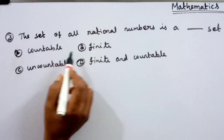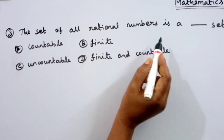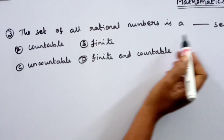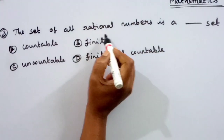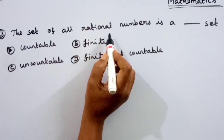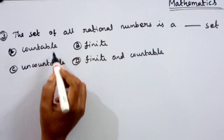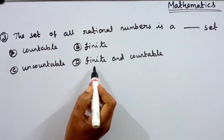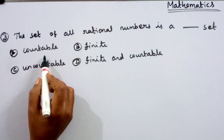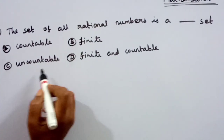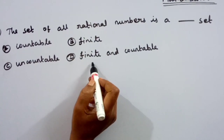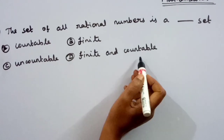The third problem: the set of all rational numbers is a blank set. Rational numbers — we have four options: first option is countable, second is finite, third is uncountable, and last one is finite and countable.